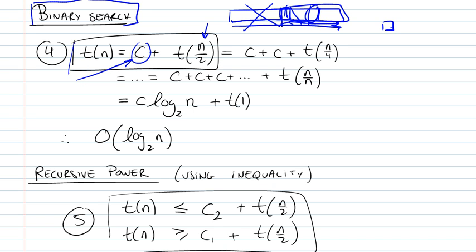Now if you expanded this recurrence relationship using backward substitution, you would notice that you would end up with a bunch of c's that are added plus t of n over n. T of n over n is t of 1, of course, and that's the base case.